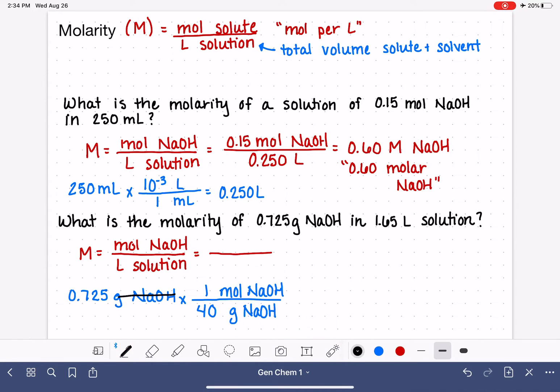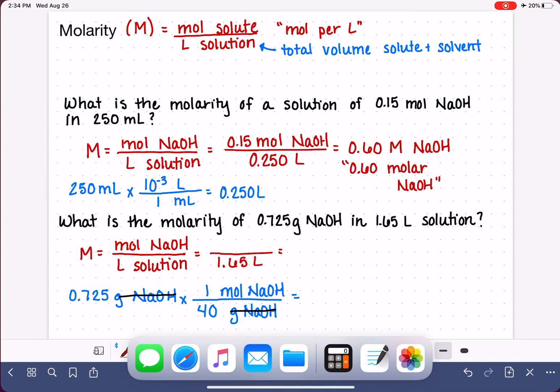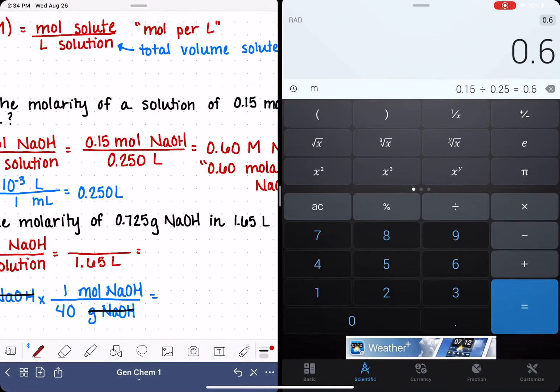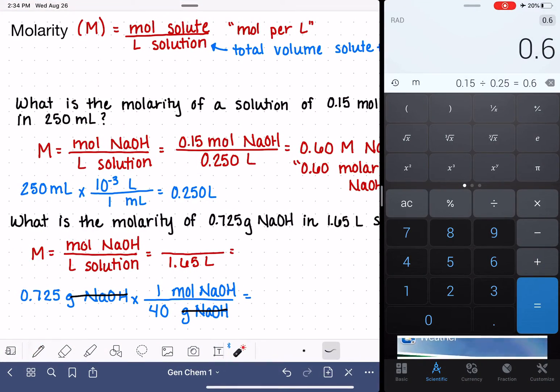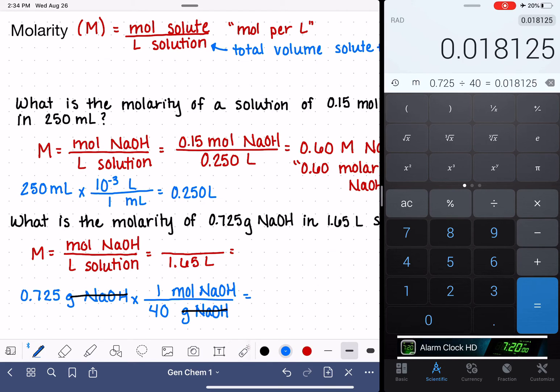These units are going to cancel out and we'll be left with units of moles of NaOH, which we're going to plug into this part of the equation. We also have the volume of the solution that's already in the correct unit, so I'm just going to write that in right now. And then we'll pull the calculator up and we'll do all of our math at the same time. So we're going to start by calculating the moles of NaOH. We have 0.725 grams dividing by our molecular weight of 40, and that is 0.0181 moles of NaOH. And I will also fill that number into my molarity calculation, 0.0181 moles.